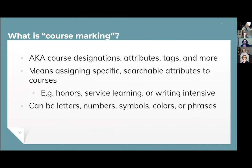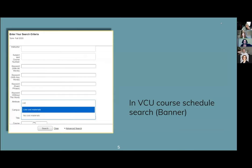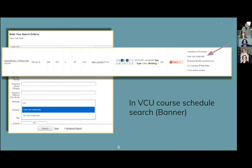What is course marking? They may also be known as course designations, attributes, or tags — basically assigning a specific searchable attribute to a course, similar to writing-intensive or honors course designations. When we talk about marking open and affordable courses, we mean indicating whether a class uses low or no-cost resources. This can appear in the course attribute field, as seen from UT Arlington, and also show up in results pages, like this example from Connecticut. At VCU, we implemented a similar attribute field model.